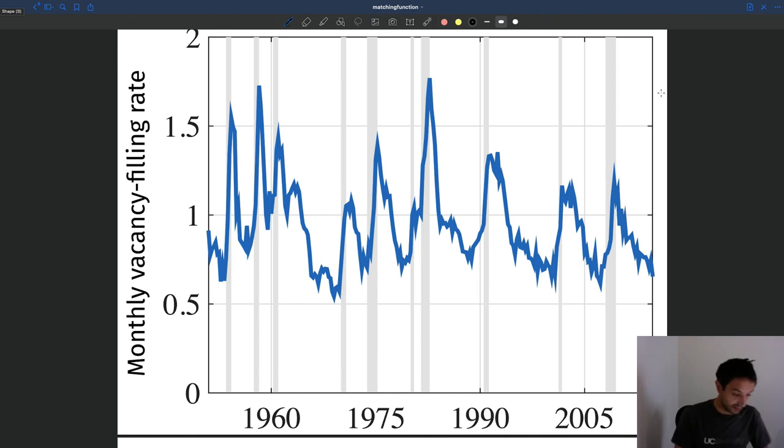So again, these are US data. Same period roughly from the 1950s to 2015. So here, this is roughly 1950, and this is roughly 2015. And what you can see again,